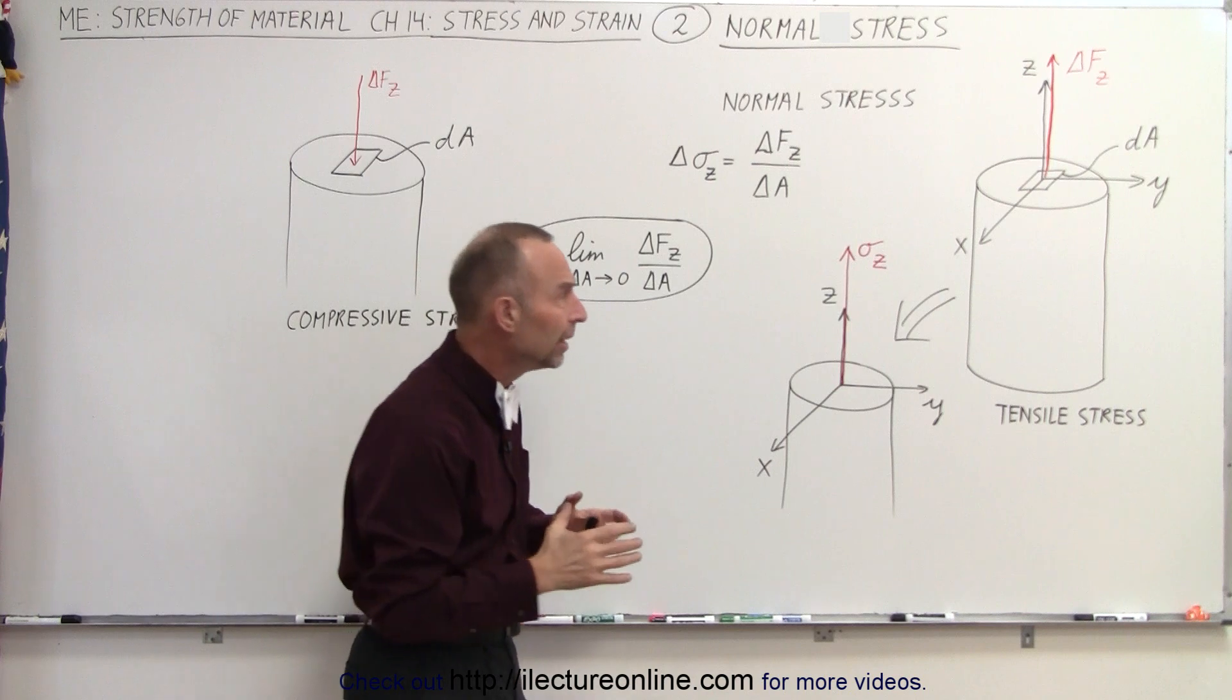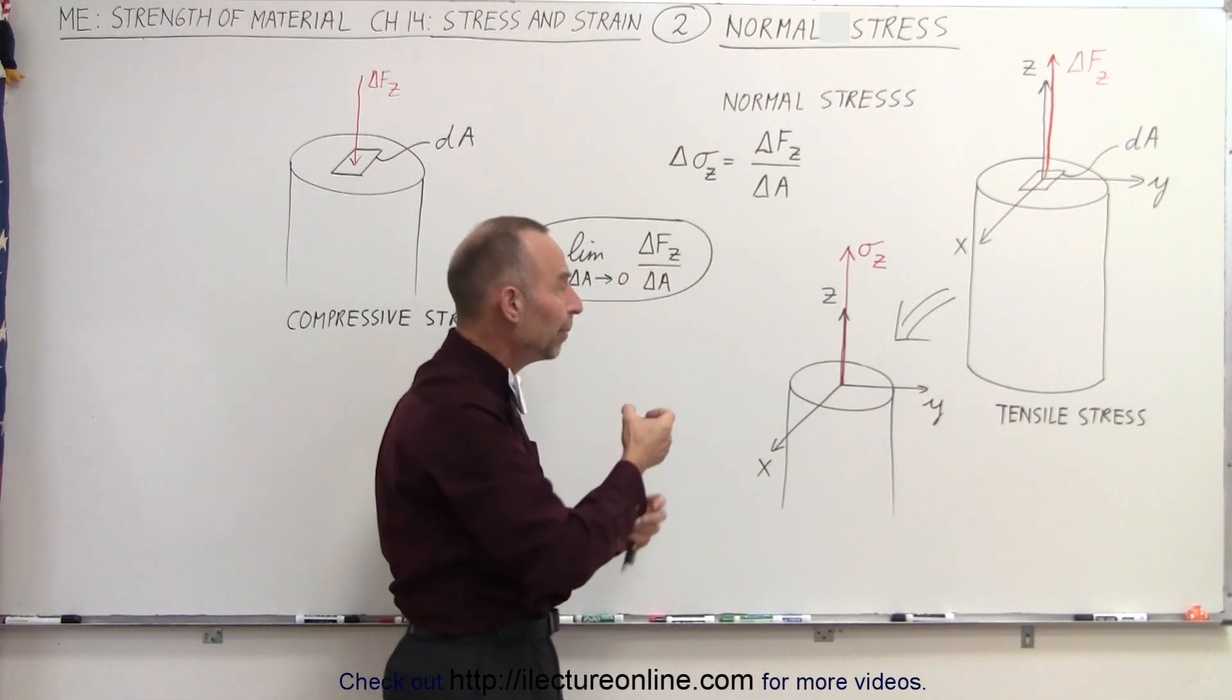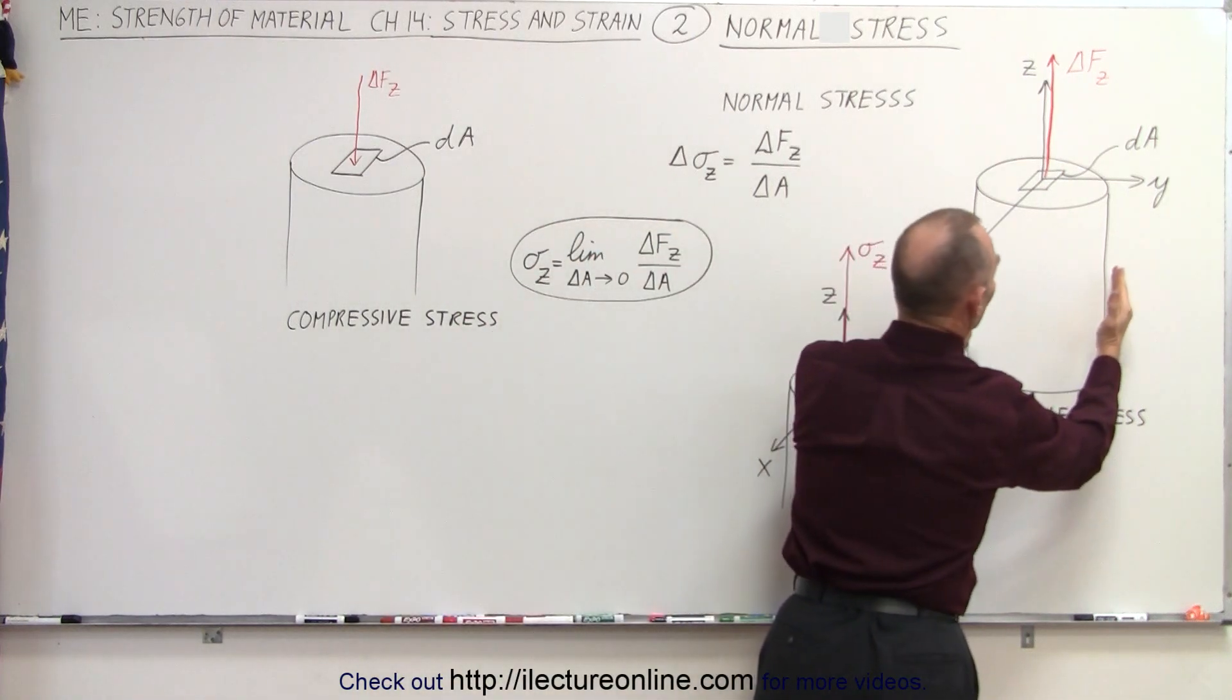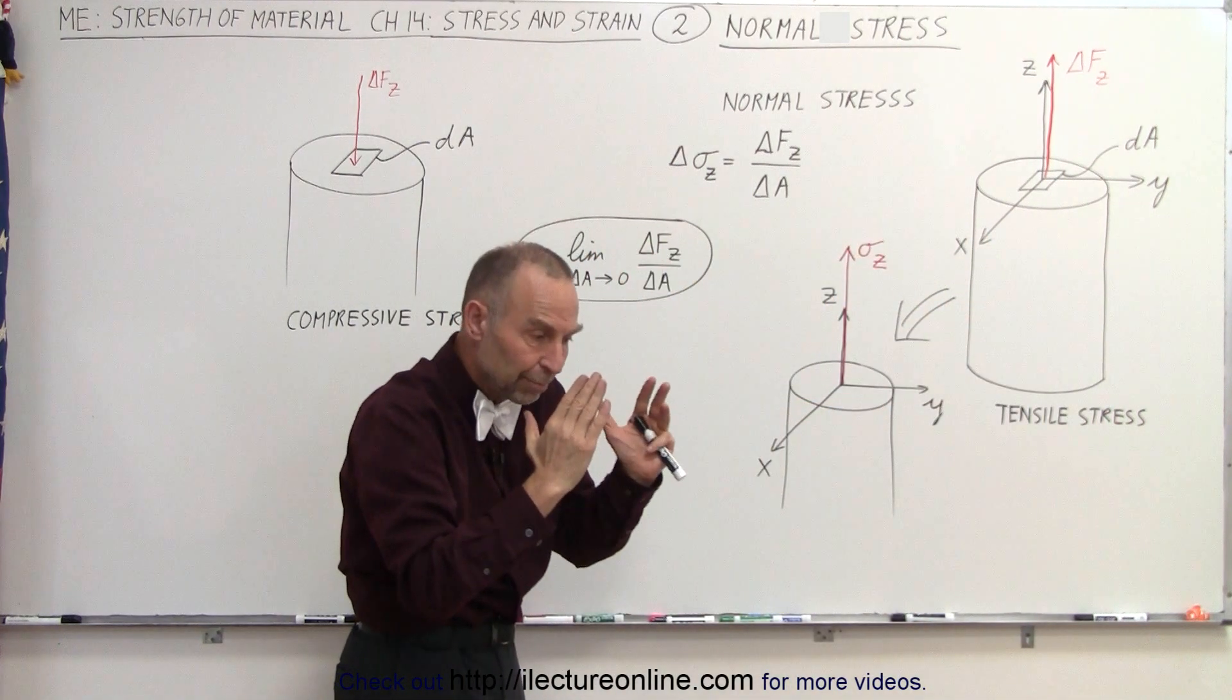Also, what we'll see later is that by sometimes compressing or by applying a tensile stress to material, you can actually change the cross-sectional area. By pulling on a cable you can actually make the cable thinner. By pushing down on a beam you can actually make the beam wider.